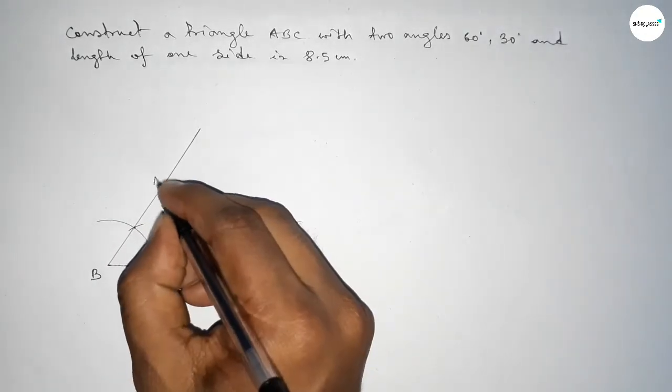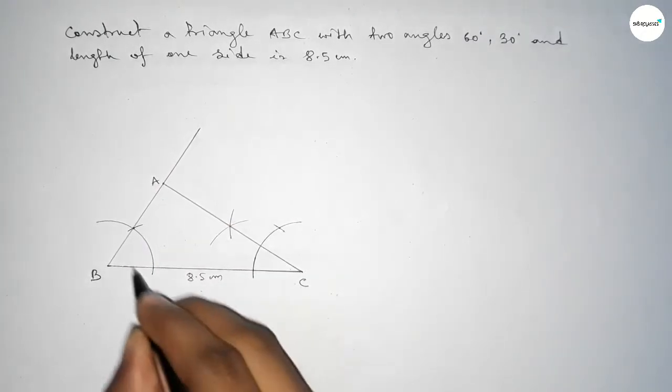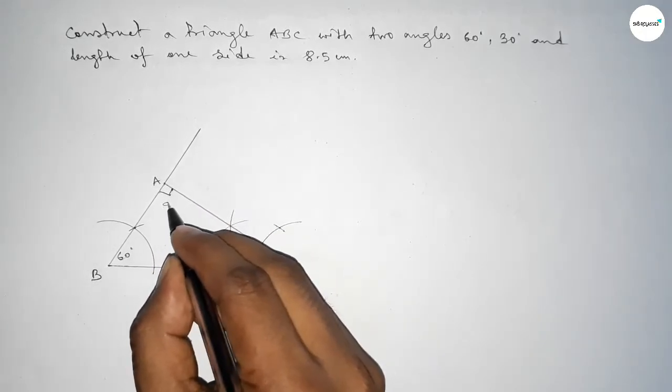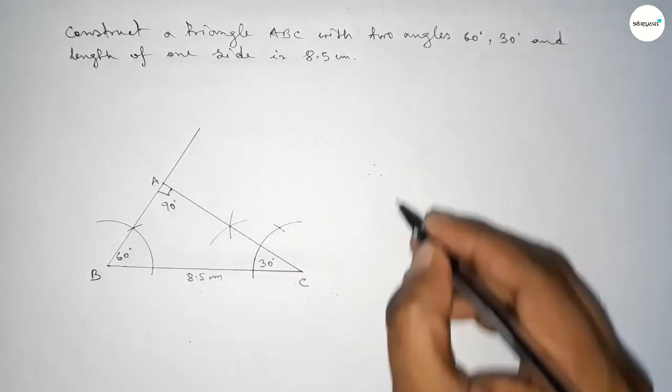And both lines intersect at point A. So this side is 8.5 centimeters, this angle 60 degrees, this angle 30 degrees, and this angle obviously 90 degrees, since 30 plus 60 equals 90 and 90 plus 90 equals 180.